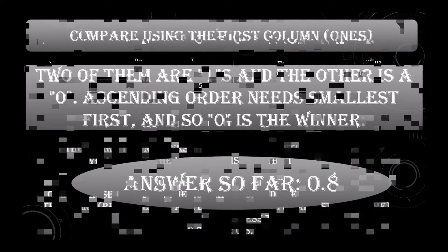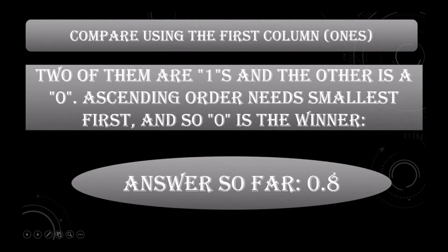Now compare using the first column — the ones column. Two of them are ones and the other is zero. For ascending order we need the smallest first, so zero is the winner. The answer so far is 0.8.